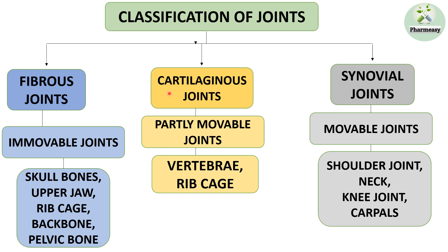Cartilaginous joints are partly movable joints. These joints are present in the vertebrae and the rib cage. Synovial joints are movable joints. These joints are present in the shoulder region, neck, knee joint, and in the carpals or wrist joint.